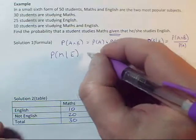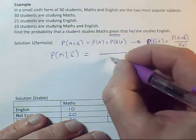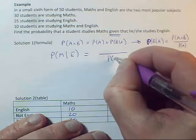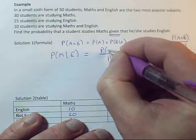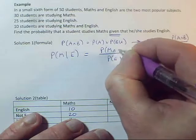In this case, it's English. So that means the probability I need to set up is going to have the probability of English, this one after the sign on the bottom, and on the top, it's got to be the probability of maths and English.